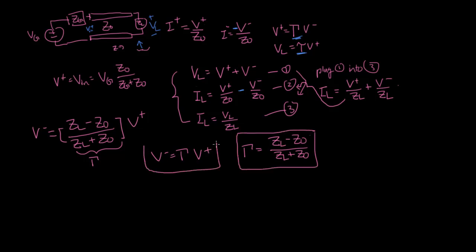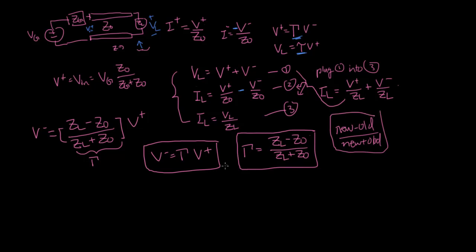The general rule I use to memorize this: if you're going from an old medium — in this case Z naught — to a new medium characterized by ZL, the reflection coefficient is simply new minus old divided by new plus old. This same rule applies if the wave reflects back toward the generator, where the new medium would be ZG.